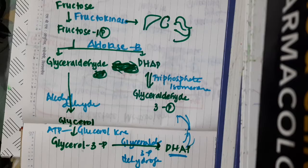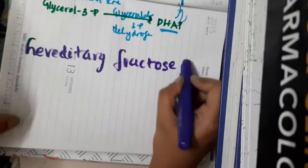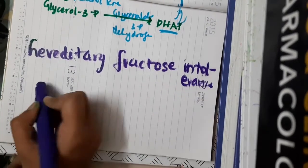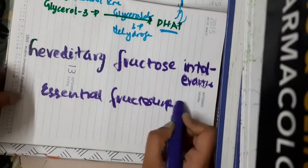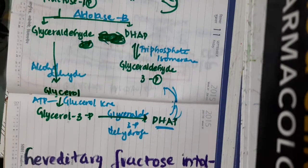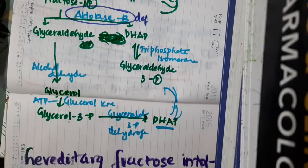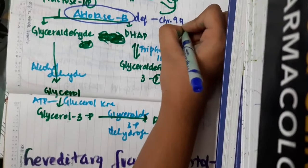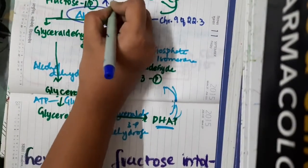There are two disorders related to fructose metabolism: hereditary fructose intolerance and essential fructosuria. In hereditary fructose intolerance, there is mainly a deficiency of the enzyme aldolase B. The mutation of the gene is located on chromosome 9q22.3. When aldolase B is deficient, fructose-1-phosphate accumulates.